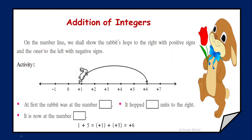Already in the previous class we have seen what is meant by integers and how to represent them on a number line. Now here, in order to learn the concept of addition of integers, we are going to take the help of Mr. Rabbit. Whenever this rabbit is hopping towards the right, we will be considering it with a positive sign. And whenever the rabbit is going to shift towards the left, that will be considered with the negative sign.